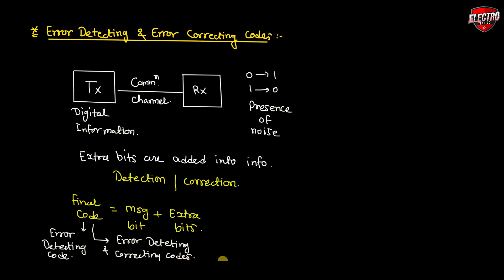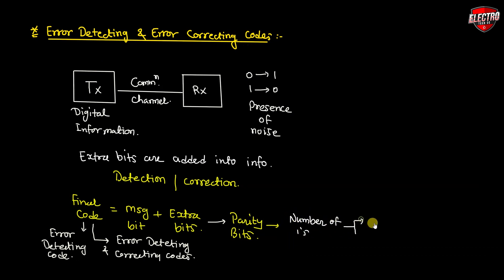Bits used for the purpose of detecting errors during transmission of binary information are known as parity bits. Parity bits are extra bits included with binary information to make the number of ones either even or odd. The message including the parity bits is transmitted from the transmitting station to the receiving station, where a device checks the parity bits. An error is detected if the checked parity does not correspond with the one transmitted.